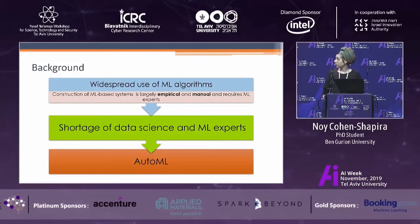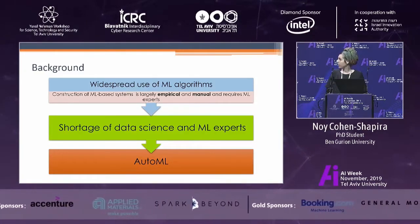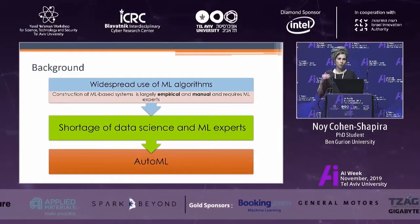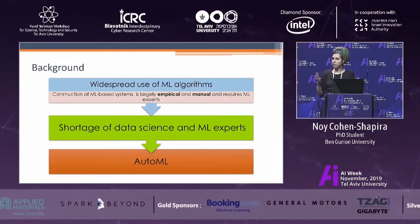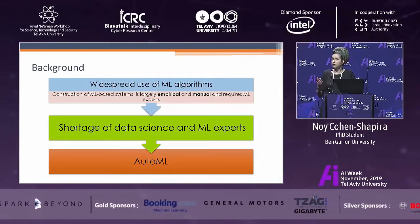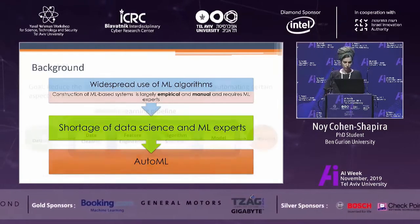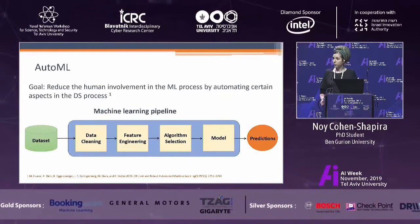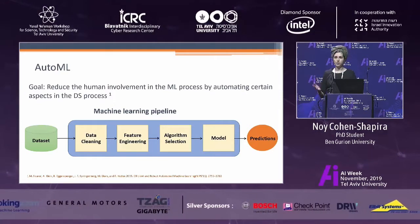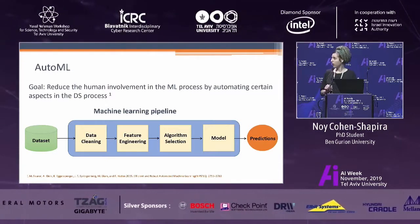The widespread use of machine learning algorithms and the high level of expertise required to utilize them have led to a shortage of data scientists and machine learning experts. This gap raised the need to automate certain aspects of the machine learning pipeline, enabling people with no data science background to benefit from machine learning. This is how the AutoML concept grew. The term automated machine learning, AutoML, describes systems that aim to automate part or all of the machine learning pipeline to reduce human involvement.